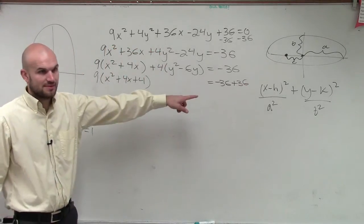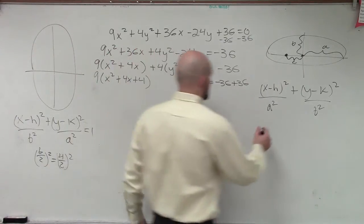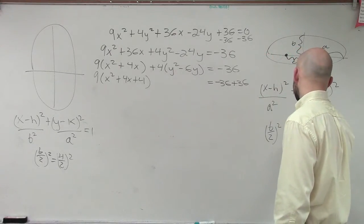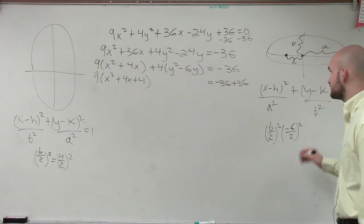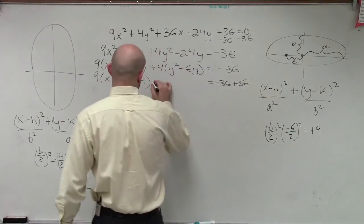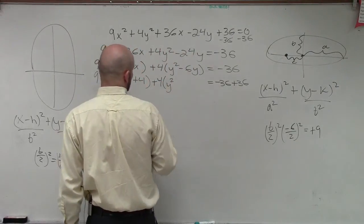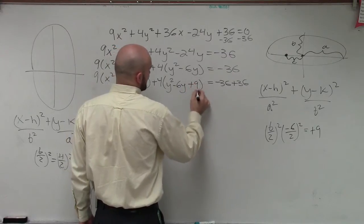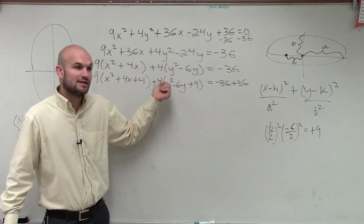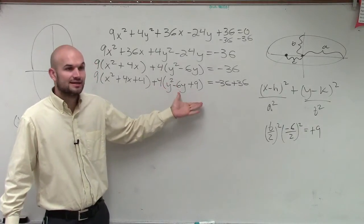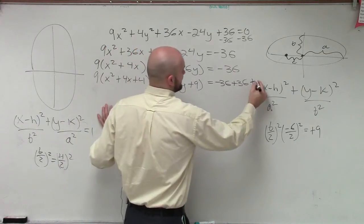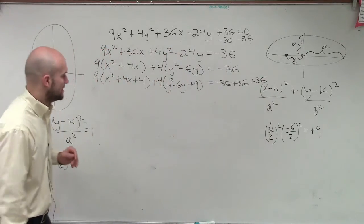Let's complete the square for the y. b/2 squared for the y is -6/2 squared, which gives me a positive 9. So I have +4 times y² - 6y + 9. But we're adding a 9 inside the parentheses, and outside the parentheses we're multiplying by 4. So 4 times 9 is 36. Since what I'm really adding is not a 9 but a 36 to the left side, I have to add a 36 to the right side.